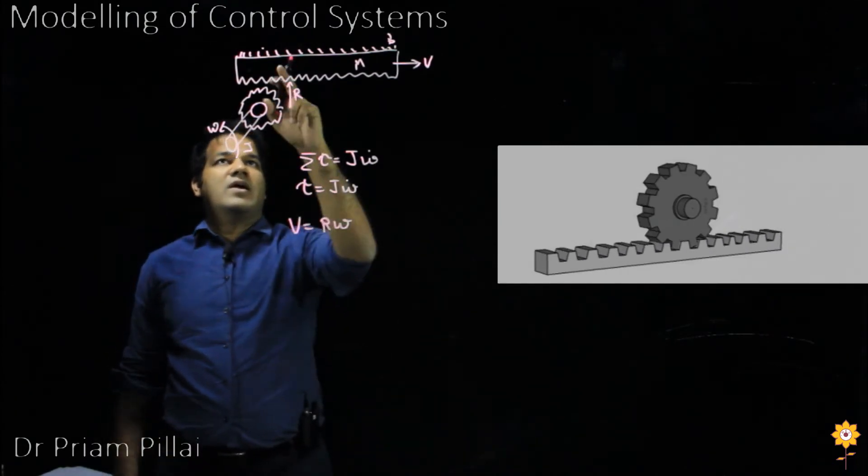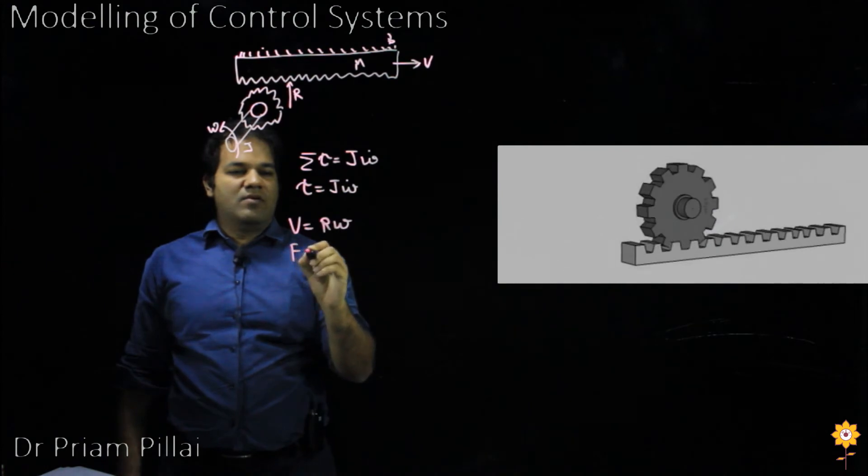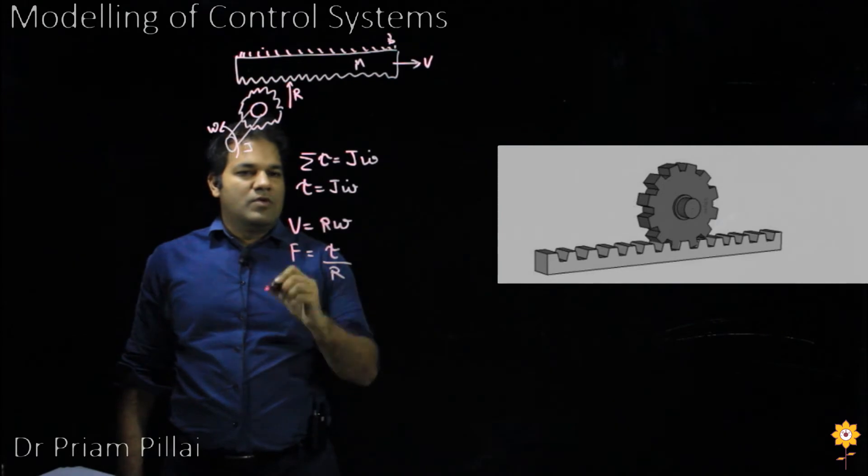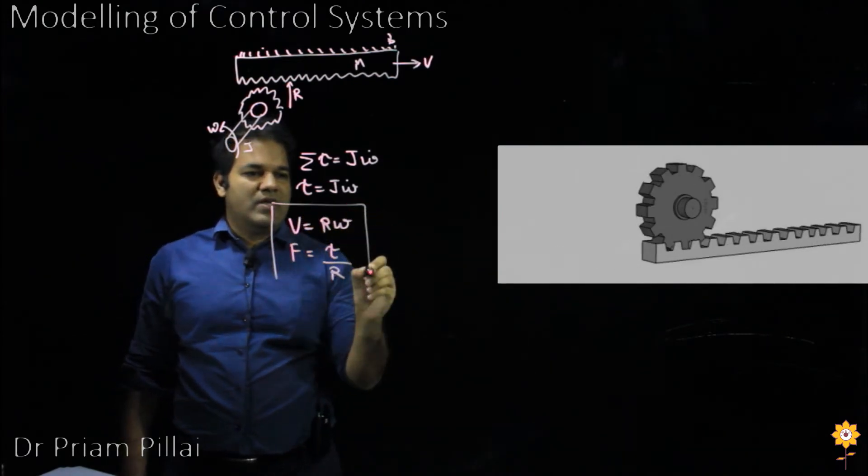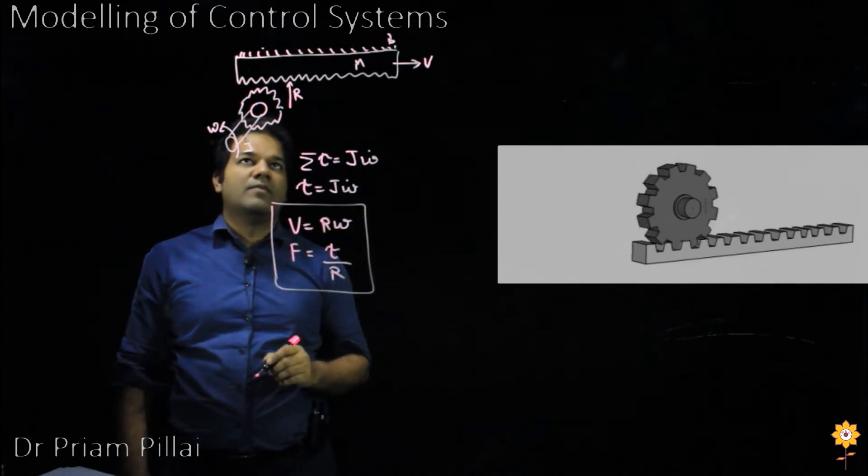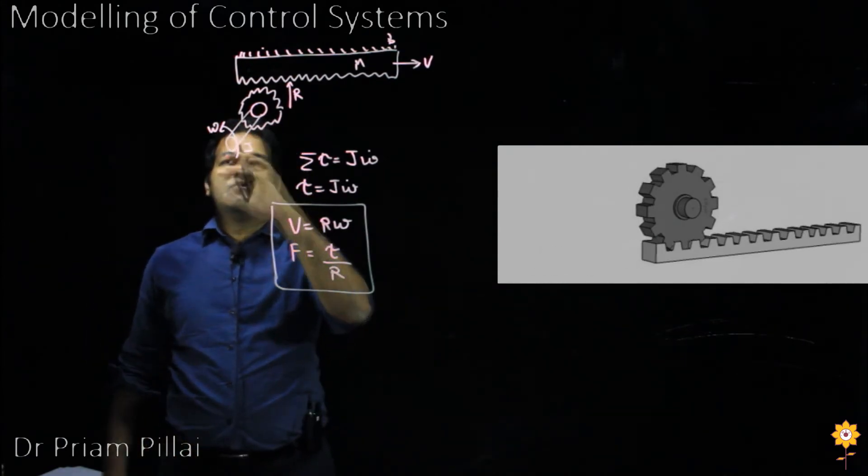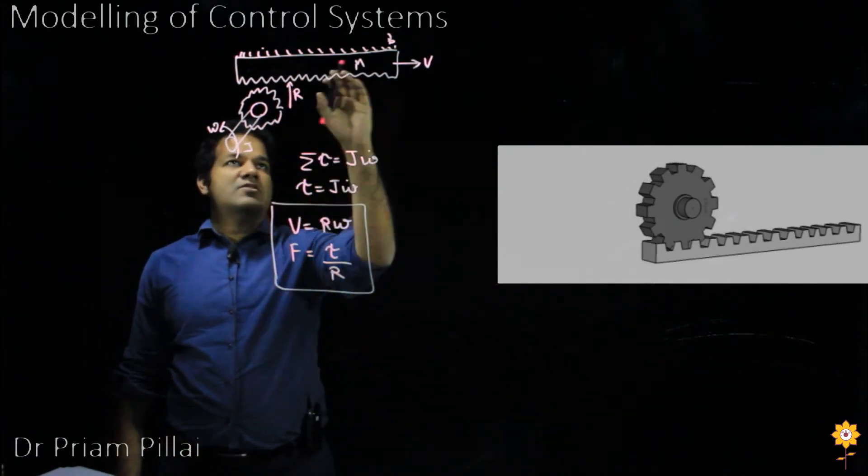Similarly, the force acting on this mass F will be simply given by the torque divided by the radius. So we can use these two expressions just like we did with a motor to go back and forth between the rotating system and this translating system.